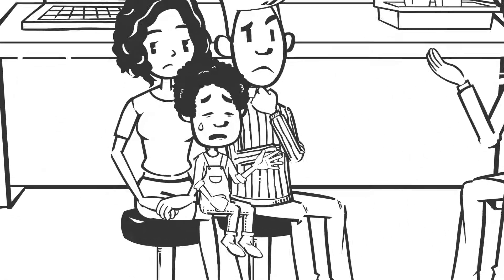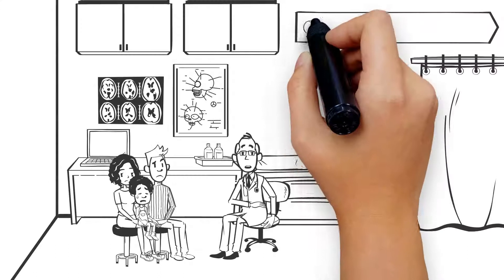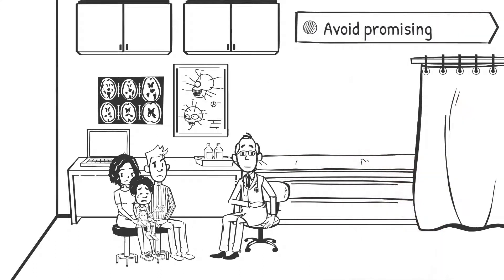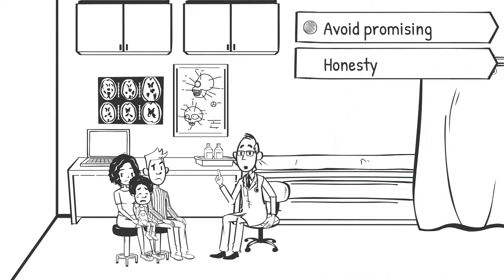Avoid making promises to the child that you can't keep, as this can impair trust. Be honest if you are unsure of something. For example, say something like, I'm sorry that I don't know exactly how the treatment will make you feel.